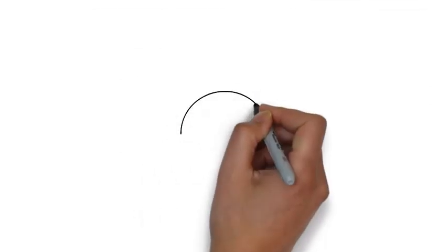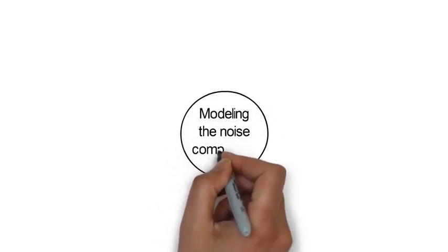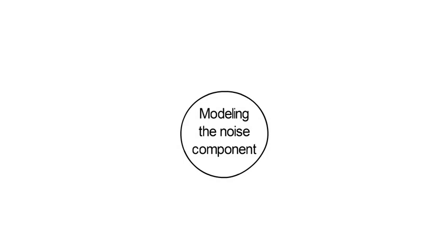Third, in this course, we also learn about how to model the noise component epsilon t. We start off with the assumption that epsilon t is a white noise or a Gaussian white noise process.